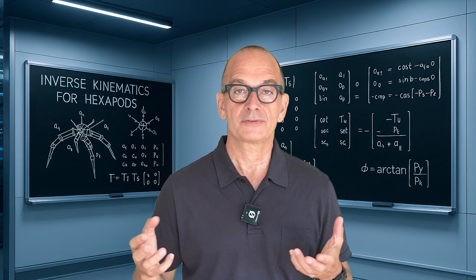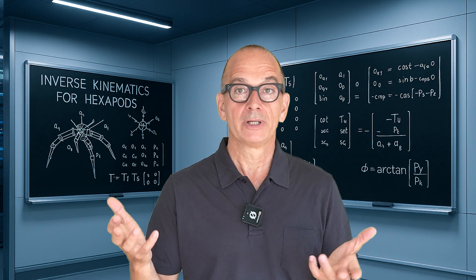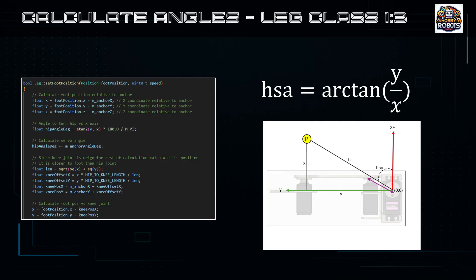The leg class holds variables that are set on initialization for anchor position and rotation versus the body. It also holds some constants for the physical length of the thigh link and the foot link we need for our calculations. But the real magic happens in the method called set foot position that is called with the desired position of the foot and it will then calculate the servo angles.